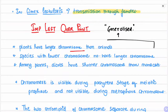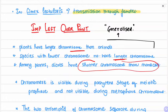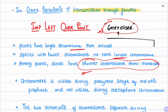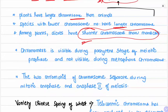Some important general points: plants have longer chromosomes than animals, and species with lower chromosome numbers have longer chromosomes. Among plants, dicots have shorter chromosomes than monocots. Chromomeres are localized heterochromatic regions in chromosomes; they are visible during the pachytene stage of meiotic prophase and not visible during metaphase.